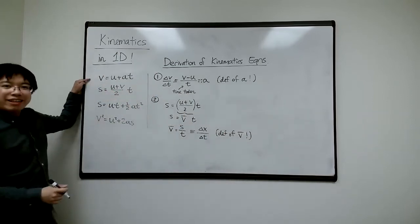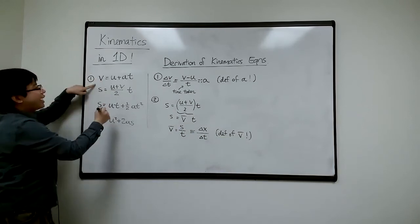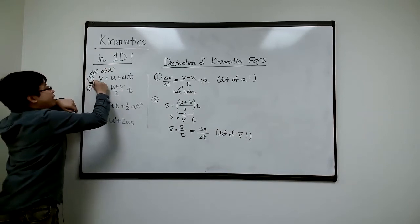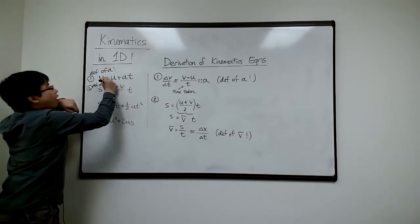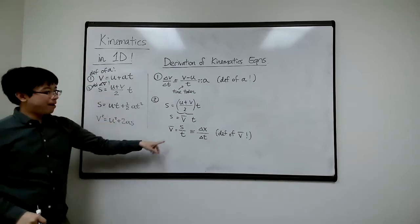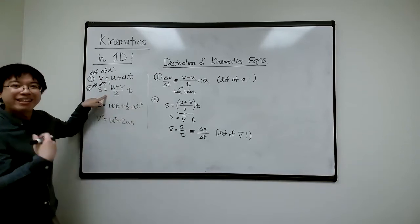So SUVAT equation number one, equation number one is just the definition of A. And number two is just the definition of V bar, average velocity, rearranged into a more friendly format. Well, you might say that's more friendly, but that's easier to use in the SUVAT.